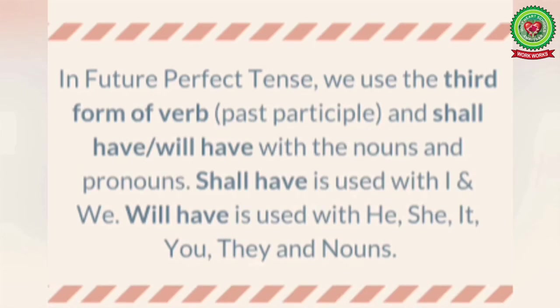Now we will discuss the structure of future perfect tense. In future perfect tense, we use the third form of verb, which is your past participle, along with 'shall have' or 'will have' with nouns and pronouns. 'Shall have' is used with 'I' and 'we' as subject, whereas 'will have' is used with he, she, it, you, they, and nouns.